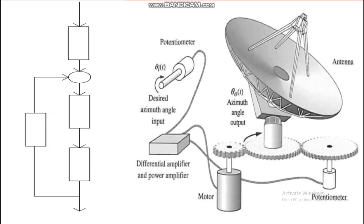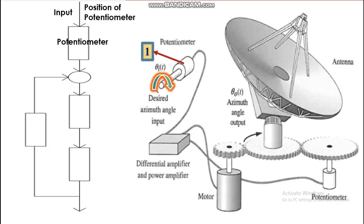Let's move through each part and see what happens in the system. Starting with the input: the position of the potentiometer is controlled by the operator through simple rotation. The input transducer potentiometer converts the set angle into a form the controller can understand. The output signal from the potentiometer depends entirely on the potential drop or resistance, which is set by the angle of the potentiometer — so the output signal corresponds directly to the set position.